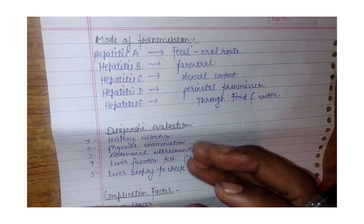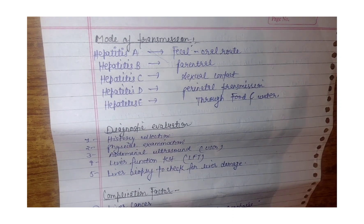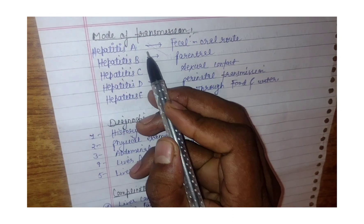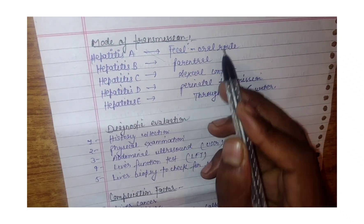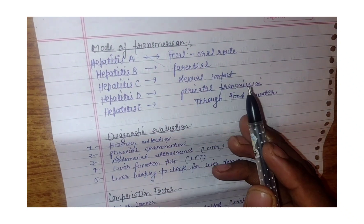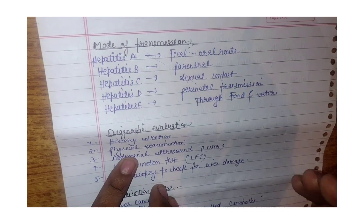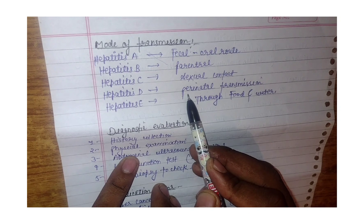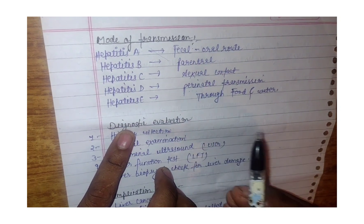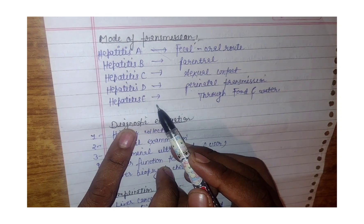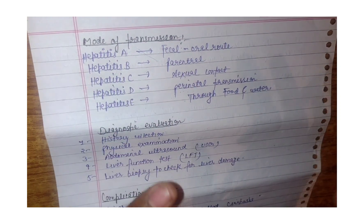Now let's talk about mode of transmission. Hepatitis A can be transferred via the feco-oral route. Hepatitis B can be transferred via the perinatal route. Hepatitis C can be transferred via sexual contact. Hepatitis D can be transferred via perinatal transmission. Hepatitis E can be transferred via food and water.